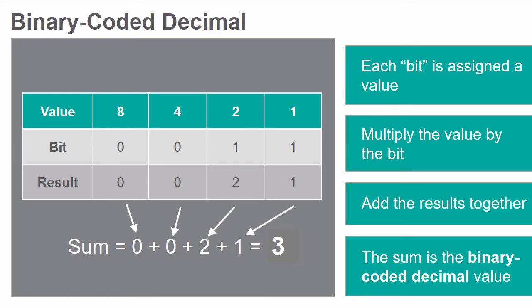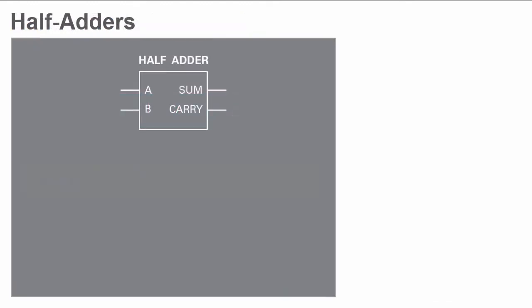If the value of the sum is between 0 to 9, it is already in BCD format. If not, it must be converted. In digital circuitry, there are two components that add inputs.